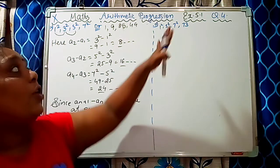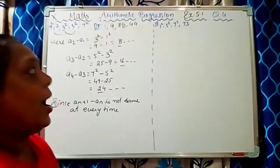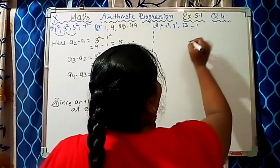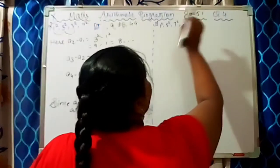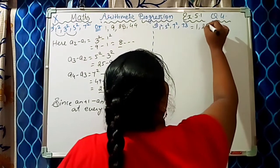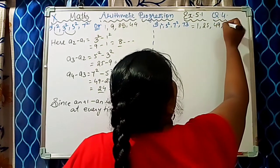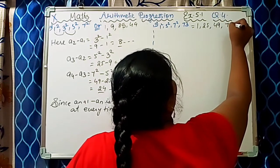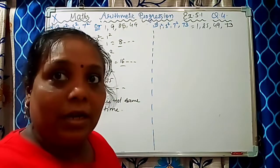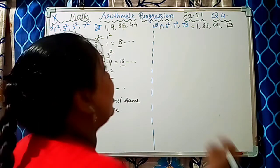Now we go for the last sum of this exercise. The series is 1², 5², 7², 73. That means 1 into 1 is 1, 5 into 5 is 25, 7 into 7 is 49, and 73. We have to find out the common difference and the terms.